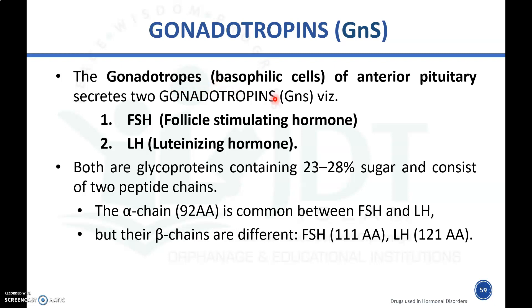Gonadotropes, which are the basophilic cells of the anterior pituitary, secrete two types of gonadotropins: follicular stimulating hormone (FSH) and luteinizing hormone (LH), together known as gonadotropins (GNs). Both are glycoproteins containing 23 to 28 percent sugar, consisting of two peptide chains. The alpha chain of 92 amino acids is common to both FSH and LH, but the beta chain differs: 111 amino acids in FSH and 121 amino acids in LH.